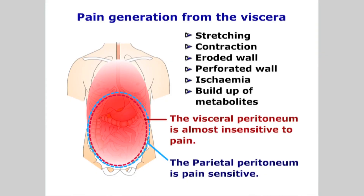Also of note are the limited types of stimuli the viscera are able to perceive. Primarily, these are restricted to the stretching and contraction of tubular structures and also pain from an eroded or perforated wall. In addition, ischemia and the subsequent build-up of metabolites will also generate pain. The visceral peritoneum is also insensitive to pain, unlike the outer or parietal peritoneum.